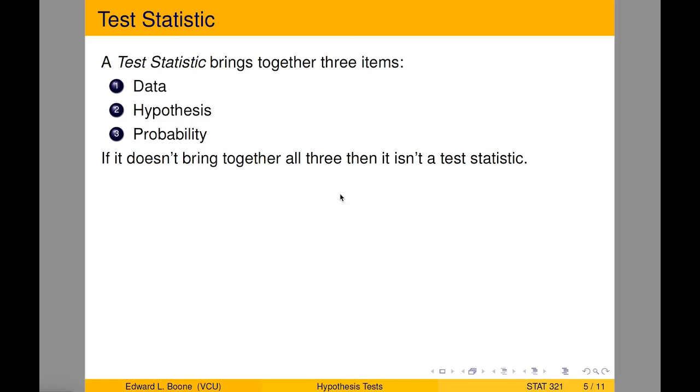So a test statistic brings together three items. It's very similar to a pivotal quantity. It brings together the idea of our data, so we're going to collect some data. We have a hypothesis that we're actually interested in testing, and the test statistic better depend on it. And it has a probability distribution. If it doesn't have all three, then it's not a test statistic.